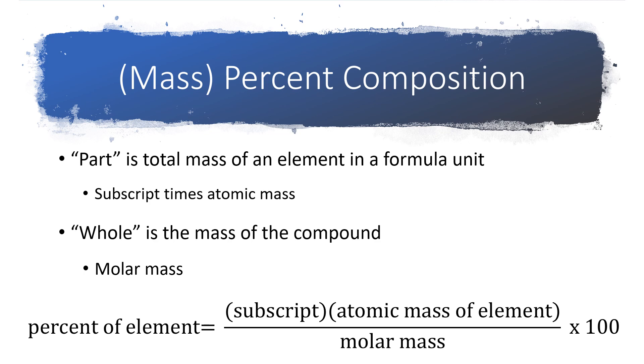The whole that goes down in the denominator refers to the molar mass of the compound. And so then we have a part over a whole times 100 to find the percent of an element in a compound.